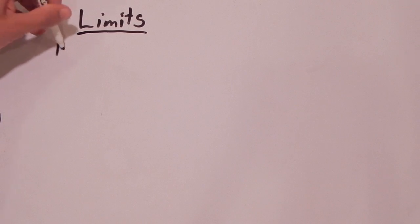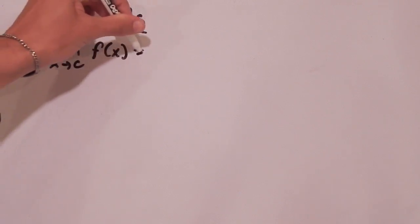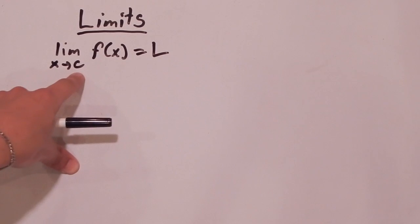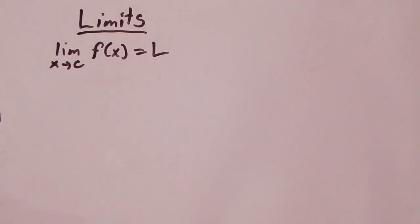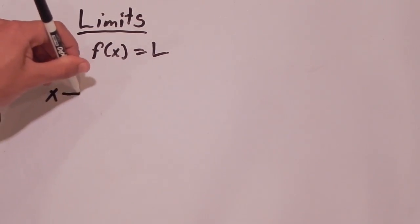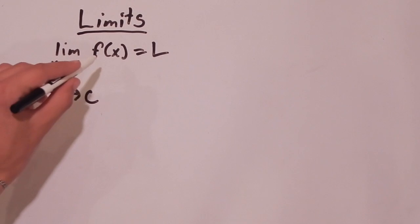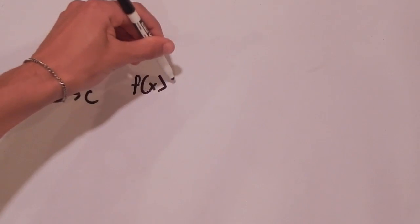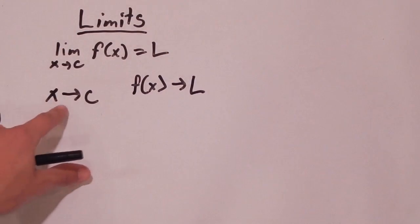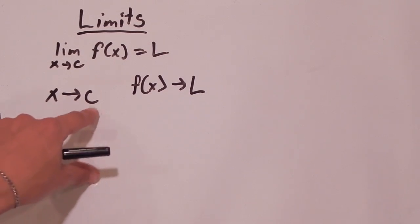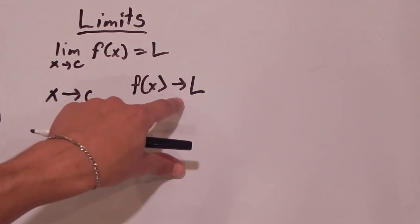The notation of a limit: you read this as the limit as x approaches c of f of x is equal to L. What does this notation mean? As x gets closer and closer and closer to c — super infinitely close to c — this statement is saying that your f of x values are getting super infinitely close to L. We're getting closer and closer to c, but we're never actually at c; we're just getting super close. Then the statement is saying that your f of x values are getting closer and closer to L.